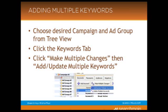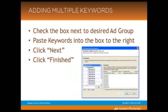Moving on to adding multiple keywords. You choose the desired campaign and ad group from the tree view — the campaign and ad group within that which you want to add the keywords to. Then you click the keywords tab, and then you click make multiple changes, then add or update multiple keywords. Once you click that, a new window is going to appear on the screen. In this window, you're going to check the box next to the ad group that you want to add the keywords to. Then you can write the keywords out ahead of time, paste them into the box, or type them in manually. Paste those keywords into the box to the right, then click next, and then click finish.